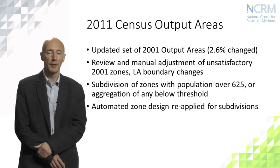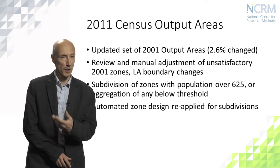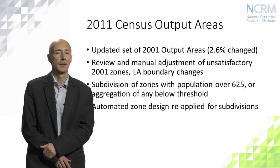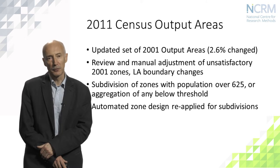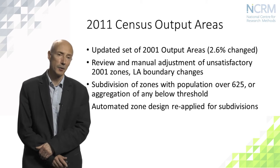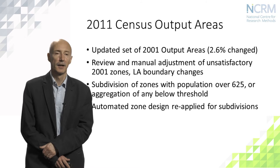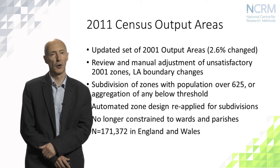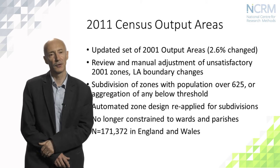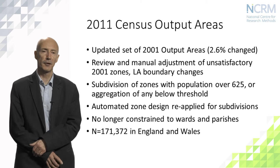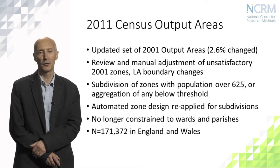In some instances there would also be aggregation of zones where populations had become too small, though that's much rarer. The same automated zone design procedures were reapplied in situations where subdivision was required, done using the AZTools software described in a previous video. One of the 2001 constraints to the ward and parish boundaries was dropped in 2011 in order to maintain a new statistical geography system, resulting in 171,372 output areas in 2011.